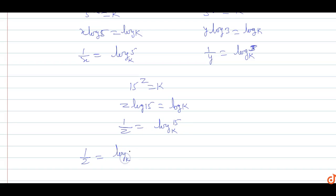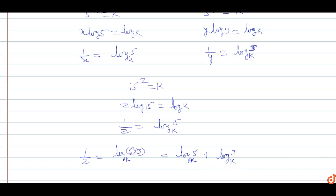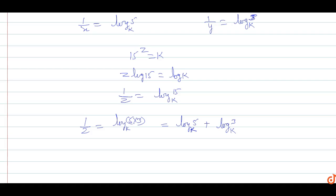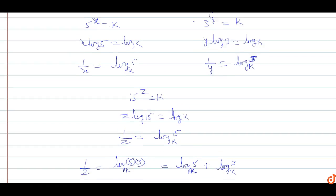Now, 1 upon z equals log 15 base k. Since 15 equals 5 times 3, this can be expanded as log 5 base k plus log 3 base k. So 1 upon z equals log 5 base k plus log 3 base k.